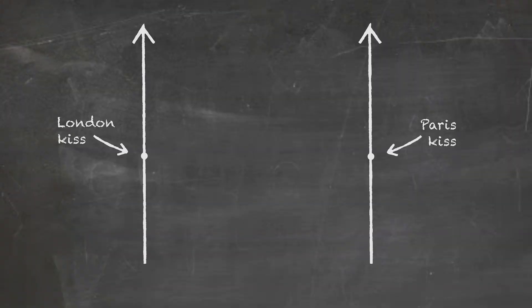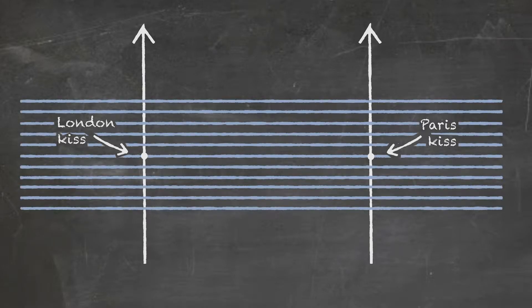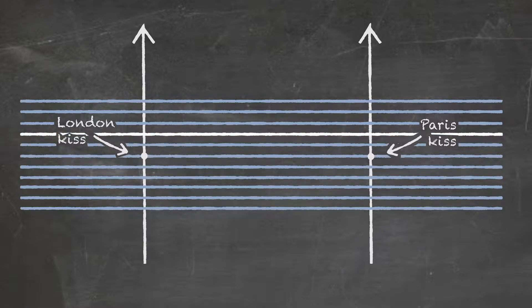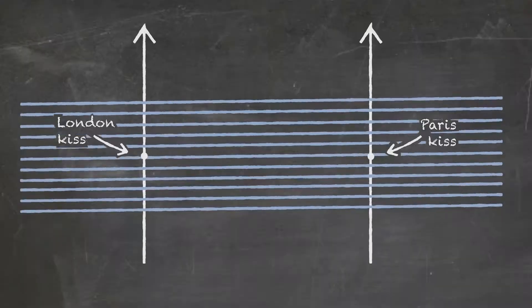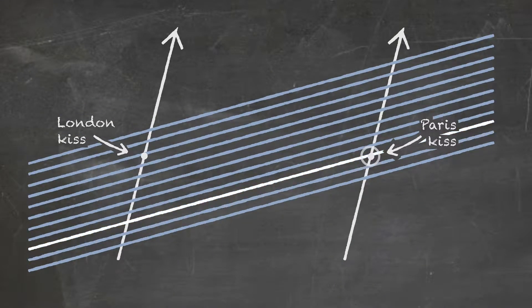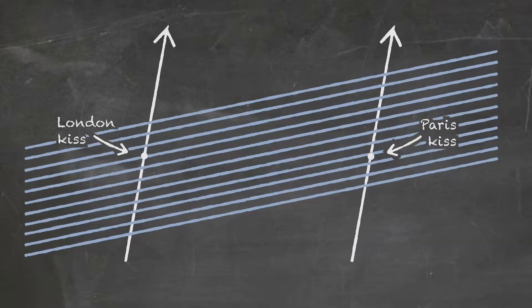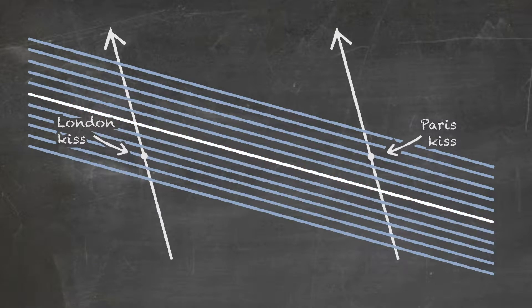Now drawing the two events of each first kiss as a point event in space-time, we find that the observer at rest on Earth judges the two events to be simultaneous. The observer moving from London towards Paris — moving to the right — judges the Paris event to happen first and the London event to happen second. And the observer moving the other direction judges the London event to happen first and the Paris event to happen second.